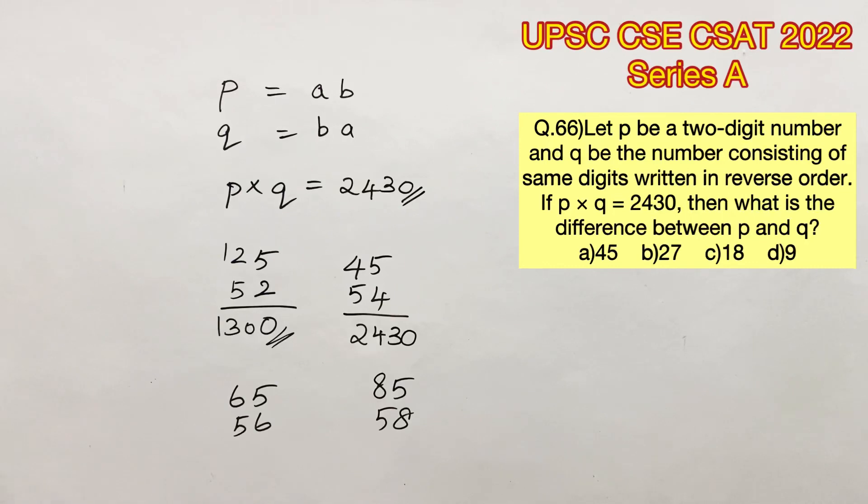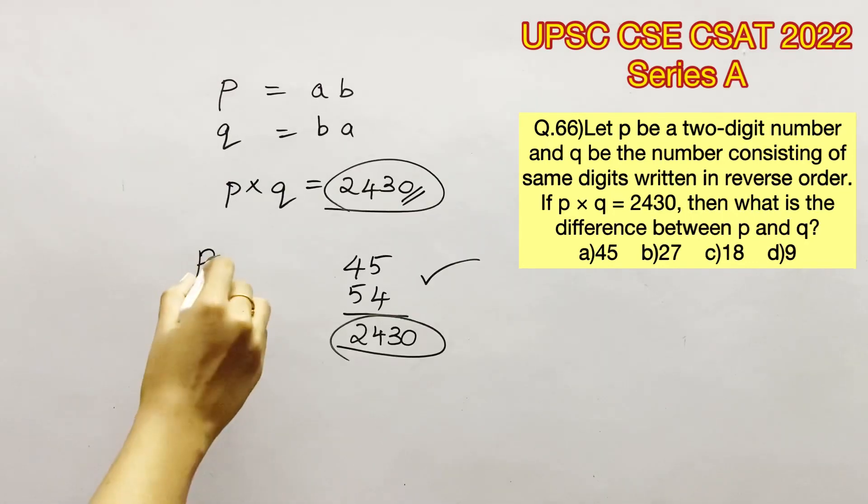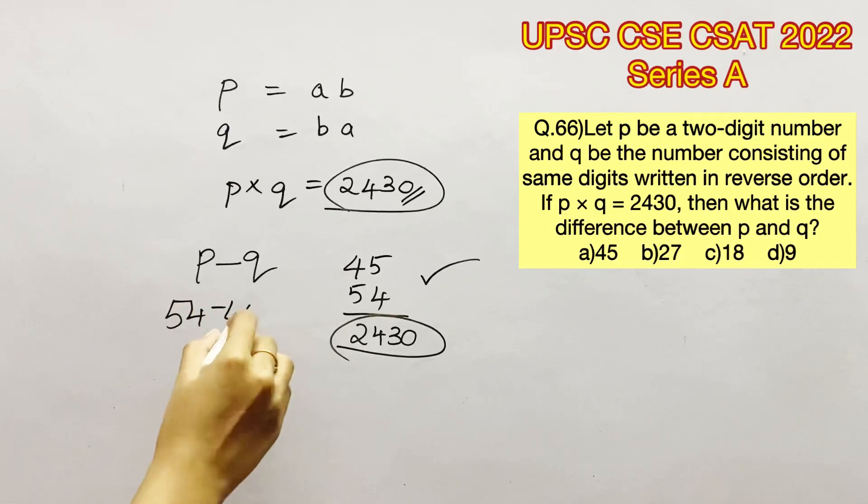Thus, we have found out the values of P and Q. Now the question is to find the difference between P and Q. Let's take the larger value first. So 54 minus 45 will give us 9. So option D is the right answer.